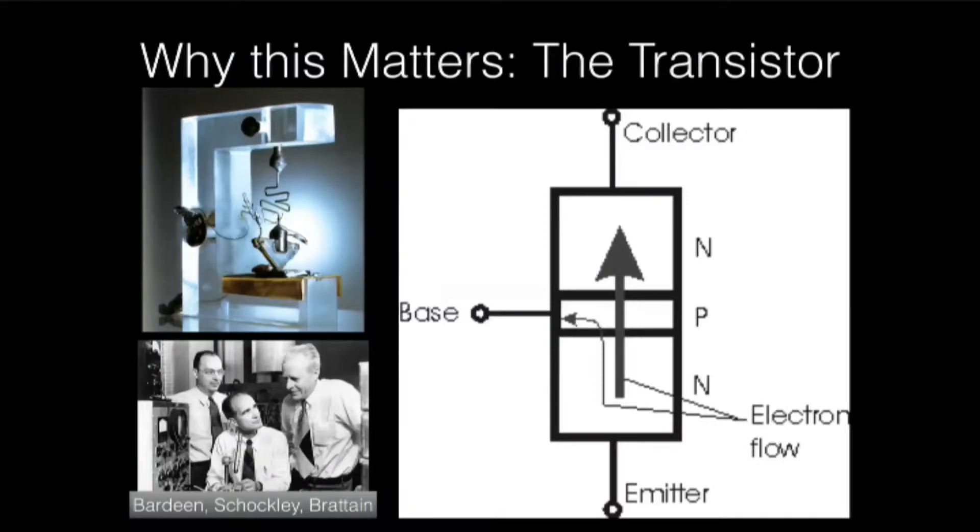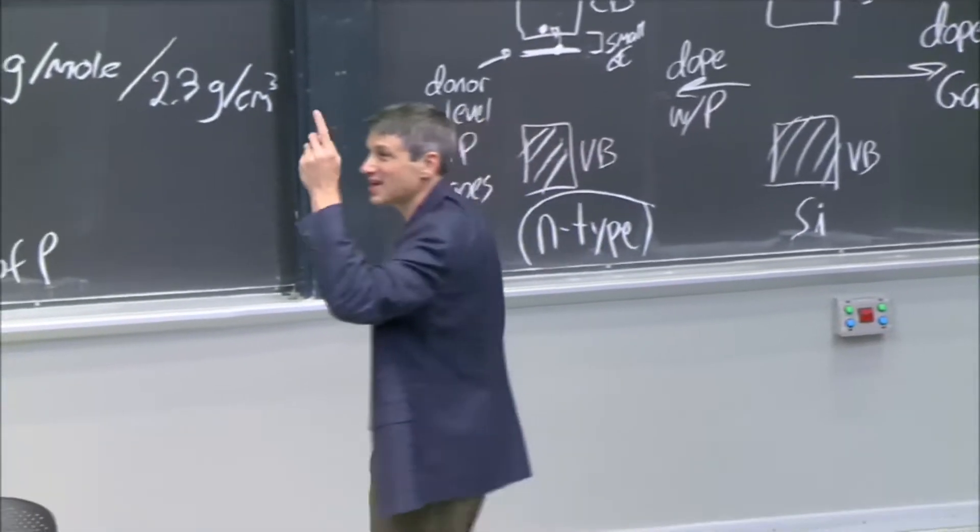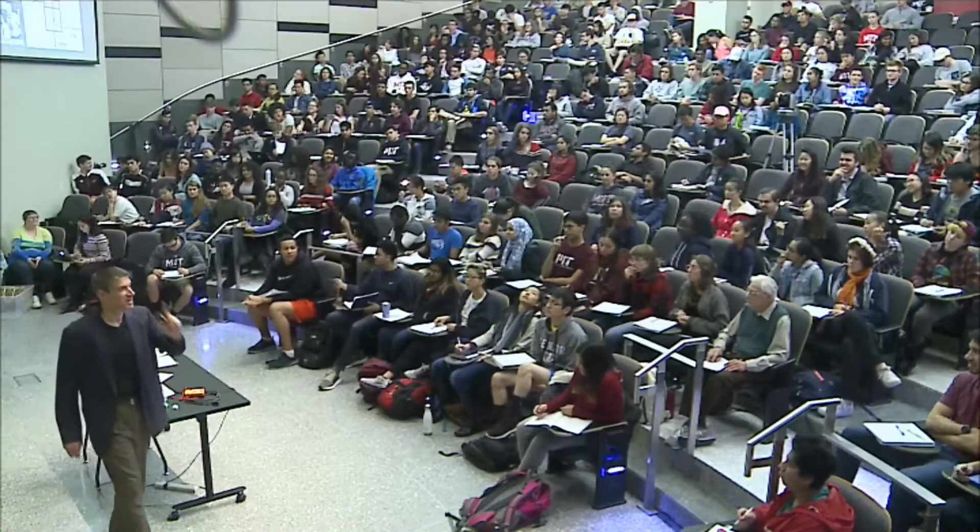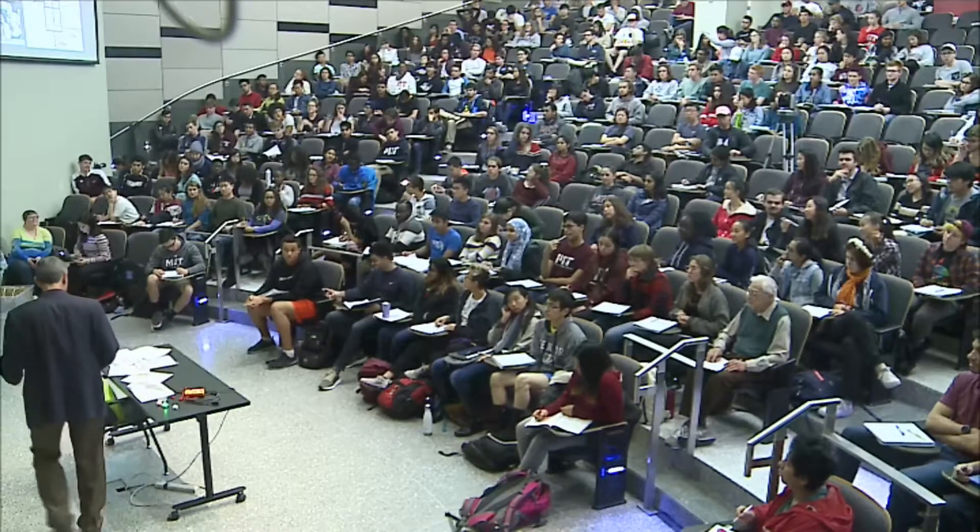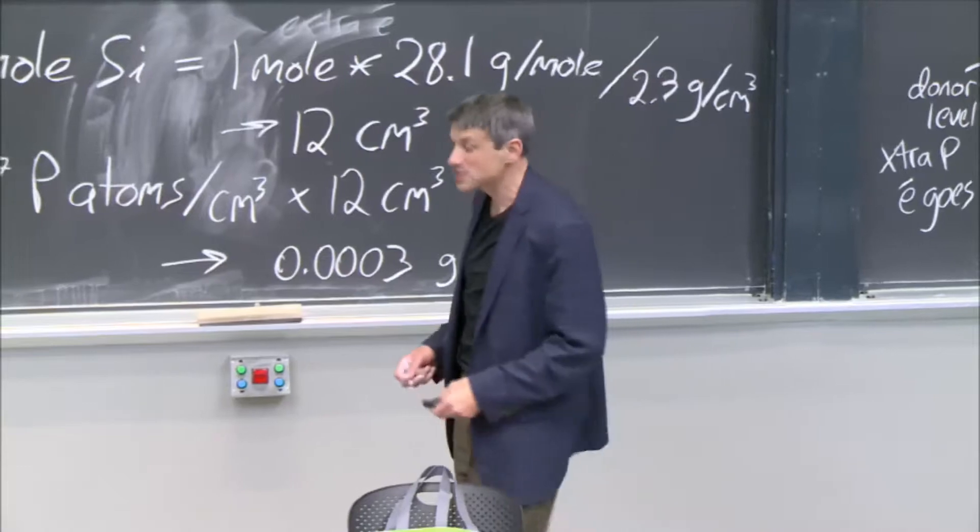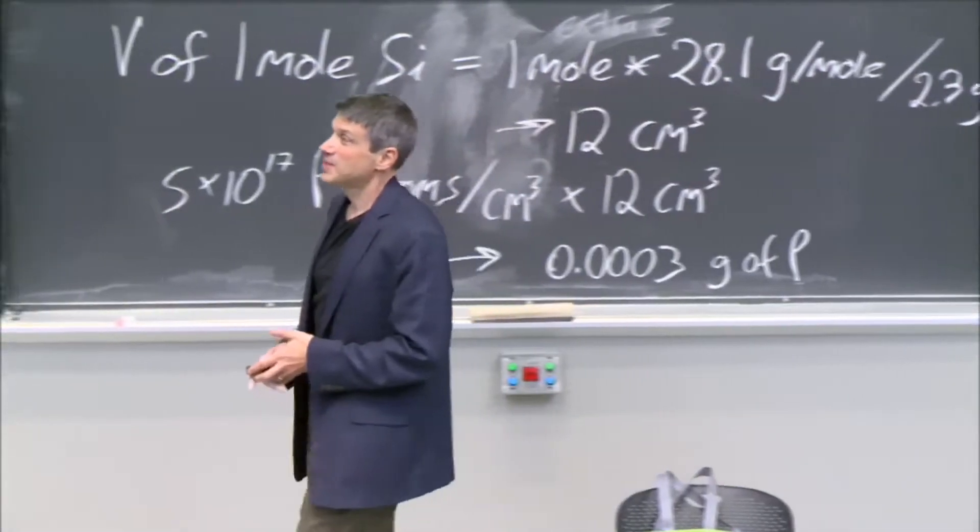Now those are the three people, Bardeen, Shockley, and Brattain, who won the Nobel Prize for this work. And that's the first transistor. Does anybody know how many transistors we make today? Per second. That's the only time metric we can use. Yeah, it's something around 10 trillion. We make 10 trillion transistors per second today.